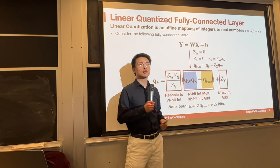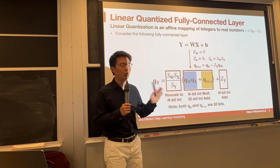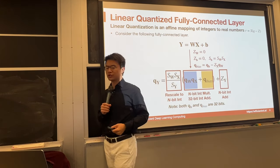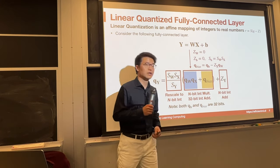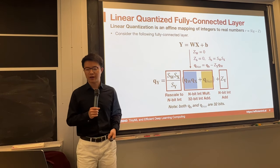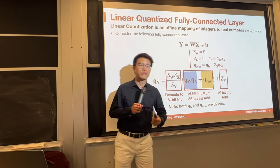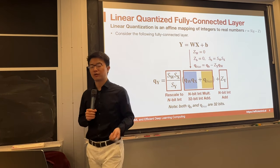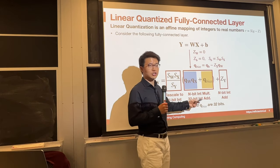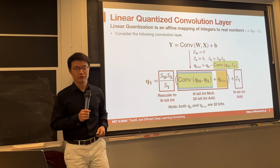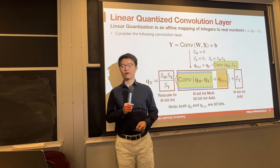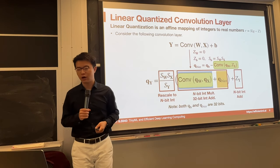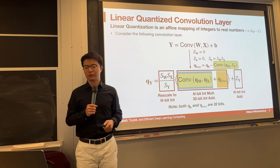The final equation gives us q_W times q_X — the quantized weight matrix-multiplied with the quantized activation — plus the bias, rescaled and added via integer addition. Since the bias has much smaller dimension compared to the weight, we can afford to use 32-bit to store it. The accumulator for matrix multiplication is also done in 32-bit integer. Similarly, for convolution, we just replace matrix multiplication with conv and the rest of the formula looks the same. We'll provide a hands-on tutorial for this in lab 2, coming soon.